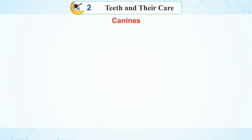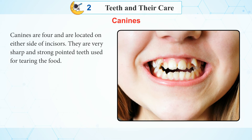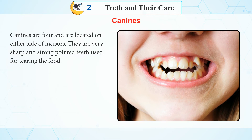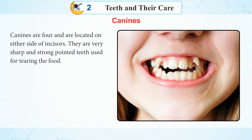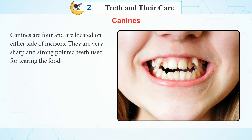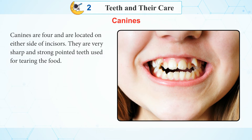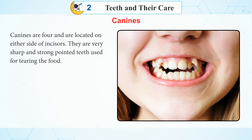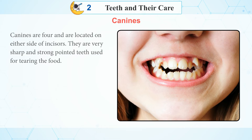Canines. Canines are four and are located on either side of the incisors. They are very sharp and strong pointed teeth used for tearing the food.